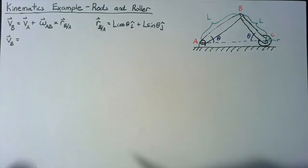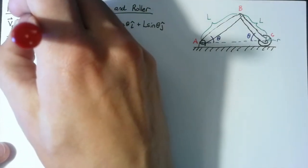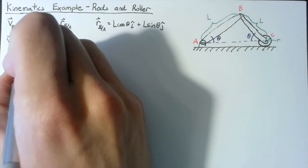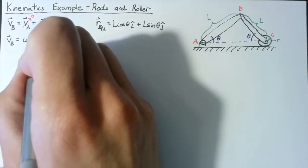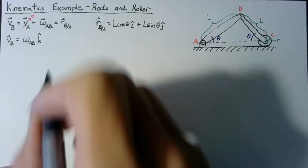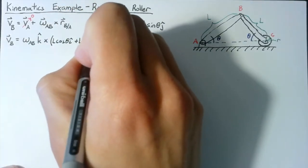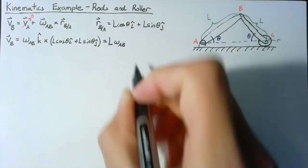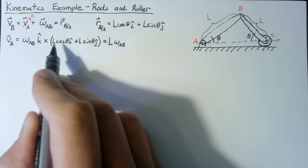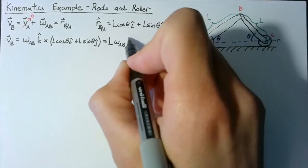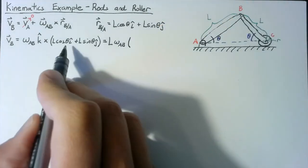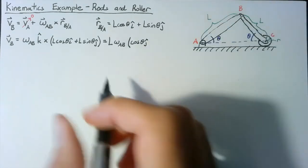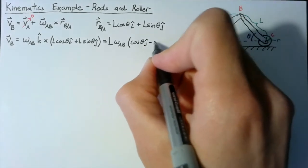Writing out VB: the velocity of A is zero because of the pinned joint. The angular velocity is omega_AB k, crossed with that position vector. Taking L and omega out, we resolve k cross i equals j, giving cosine(theta) j, and k cross j equals negative i, giving minus sine(theta) i. This gives us the velocity of B.